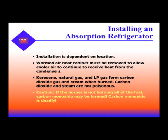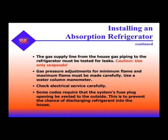When installing an absorption refrigerator, installation is dependent on location. Warm air near the cabinet must be removed to allow cooler air to continue to receive heat from the condensers. Kerosene, natural gas, and LP form carbon dioxide and steam when burned — these are not poisonous. However, if the burner is not burning all the fuel, carbon monoxide may be formed, and carbon monoxide is deadly. The gas supply line must be tested for leaks using only soap suds. Gas pressure adjustments for minimum and maximum flame must be made carefully using a water column manometer. Check the electrical service carefully. Some codes require that the system's fuse plug opening be vented to the outside to prevent discharging directly into the house.